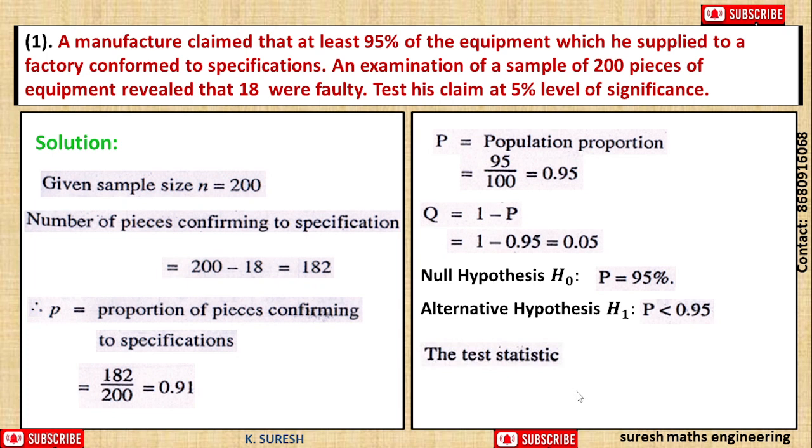The test statistic: here we use the Z test formula. My sample size is greater than 30, 200, which is a large sample. Large sample always uses Z test. Z test for single proportion equals small p minus capital P divided by square root of PQ by n.